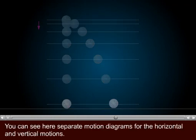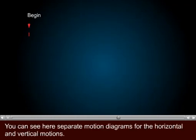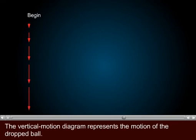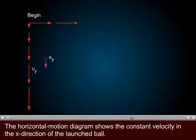You can see here separate motion diagrams for the horizontal and vertical motions. The vertical motion diagram represents the motion of the dropped ball. The horizontal motion diagram shows the constant velocity in the x-direction of the launched ball.